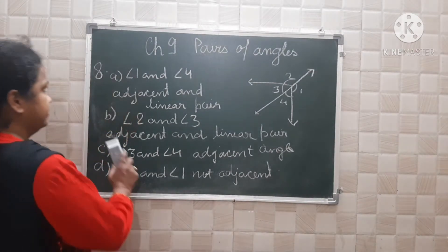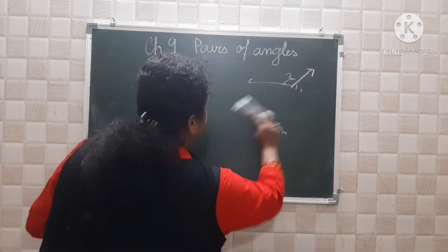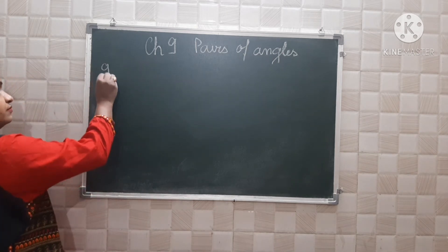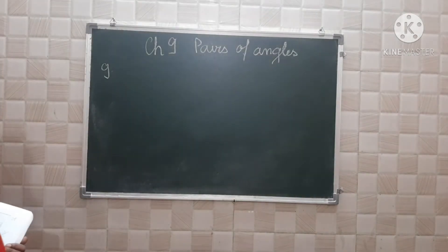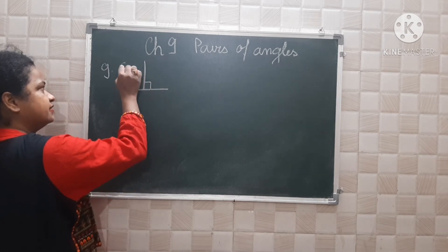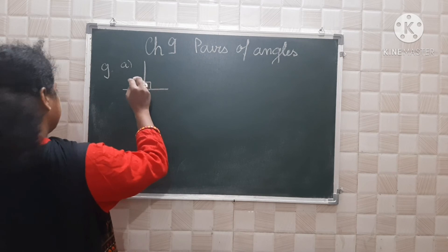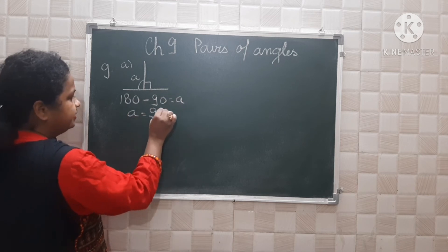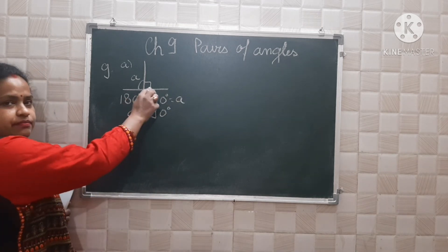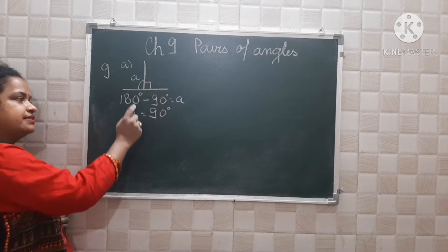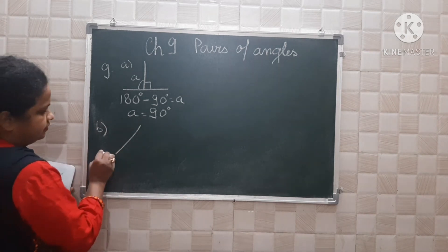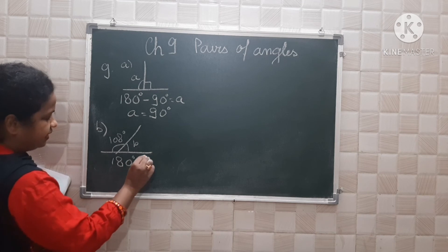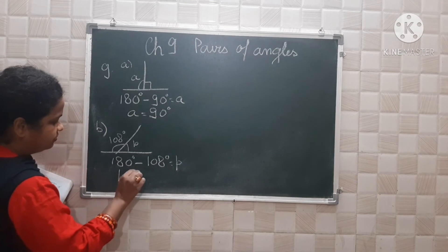Now let's do question number 9. In this question you have straight line angles. For part A: 180 minus 90 equals A, so A is equal to 90 degrees, because the right angle symbol means 90 degrees and a straight line is 180 degrees. For part B, the angle is 108 degrees, so 180 minus 108 equals P, and P is equal to 72 degrees.